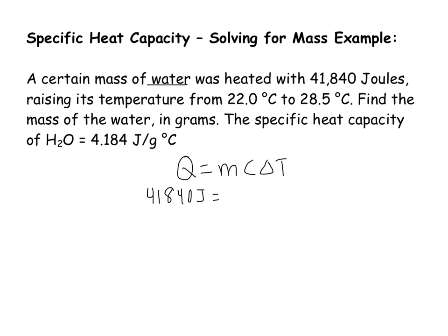Raising its temperature from 22 to 28.5 degrees Celsius. So to find my delta t, that's always temperature final minus temperature initial. My final temperature is 28.5 minus 22, so that's going to give me 6.5 for my delta t.